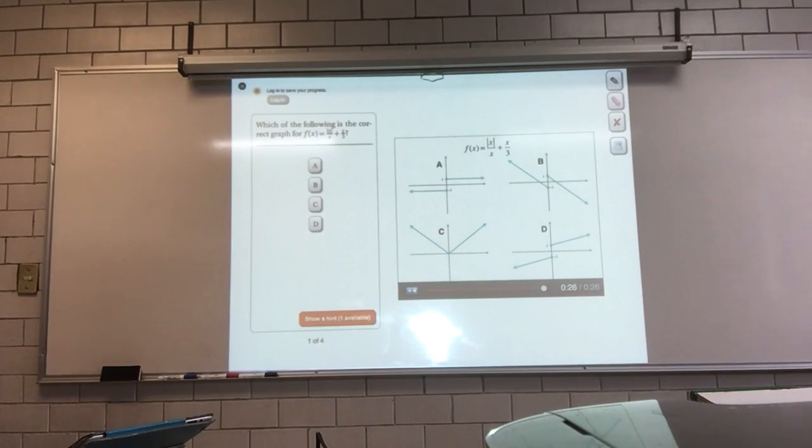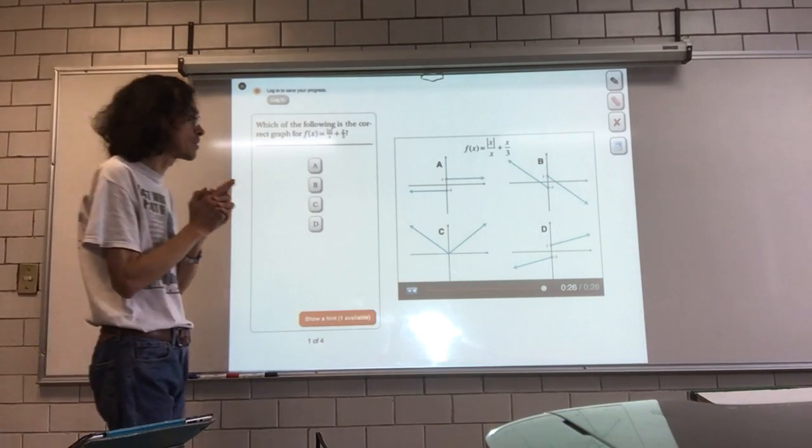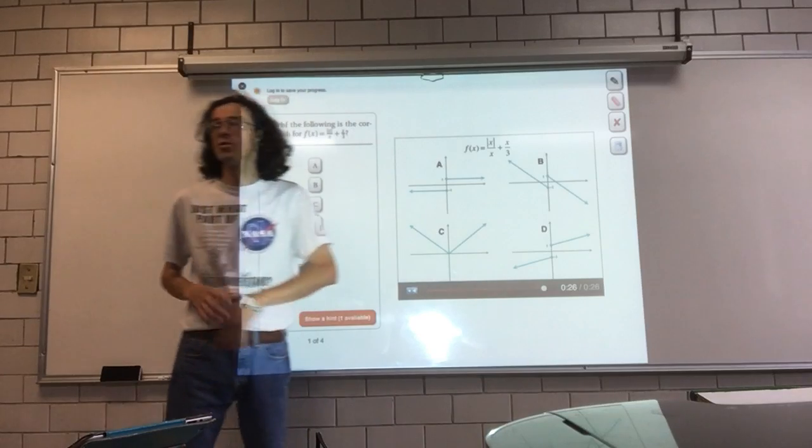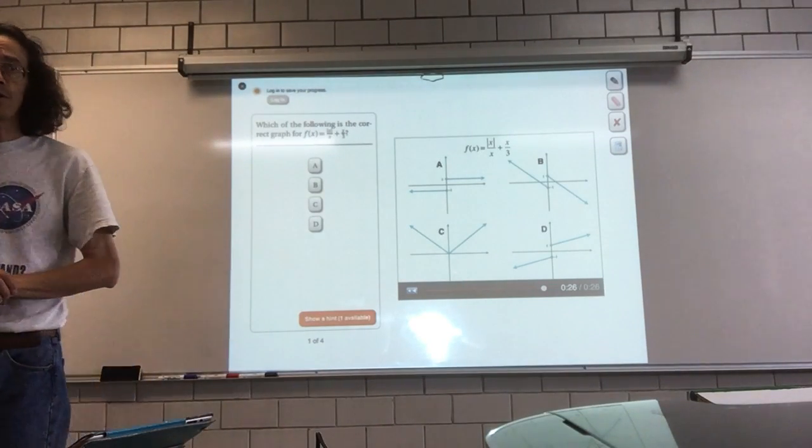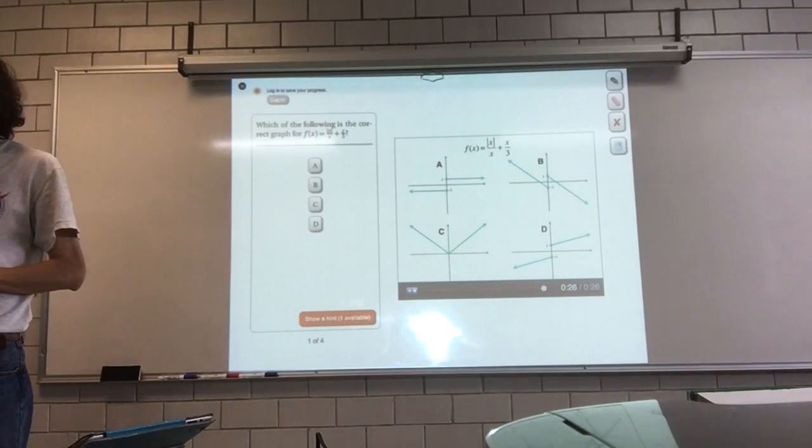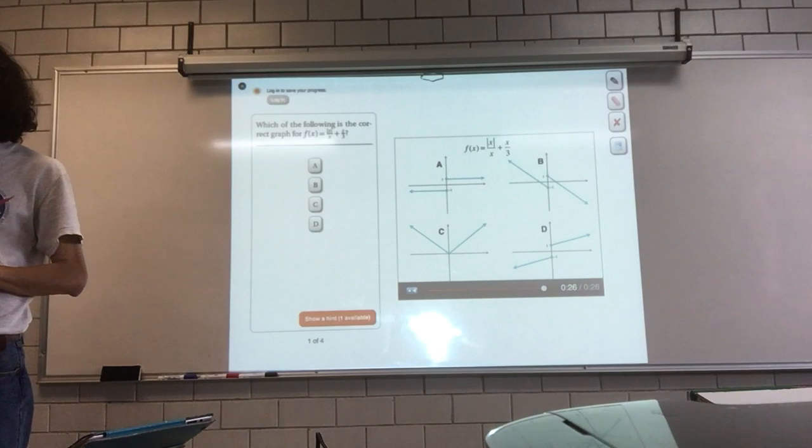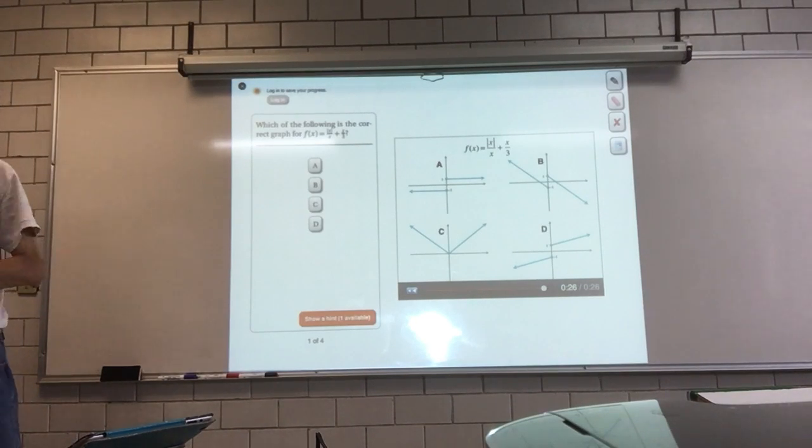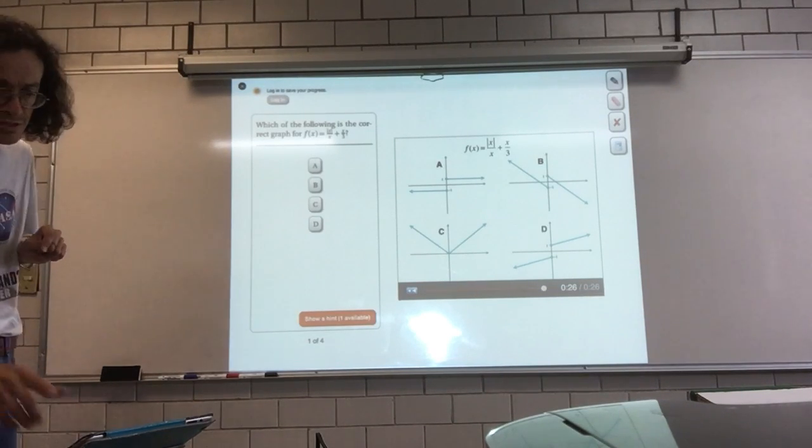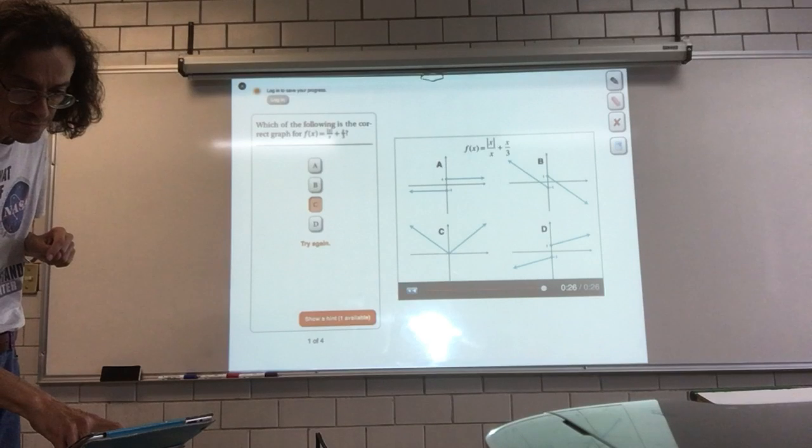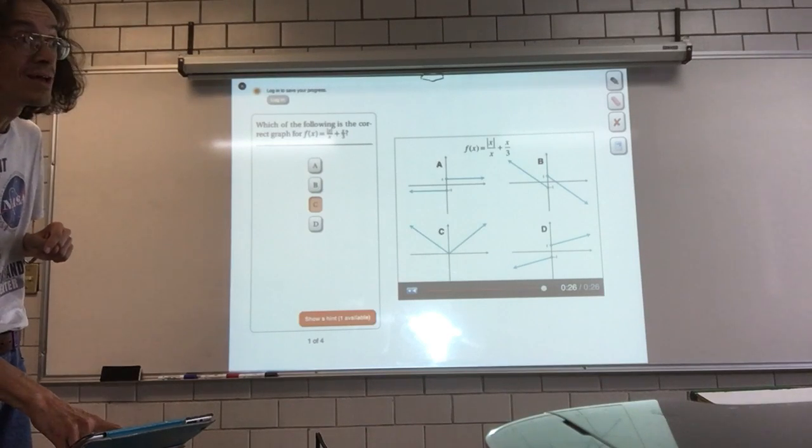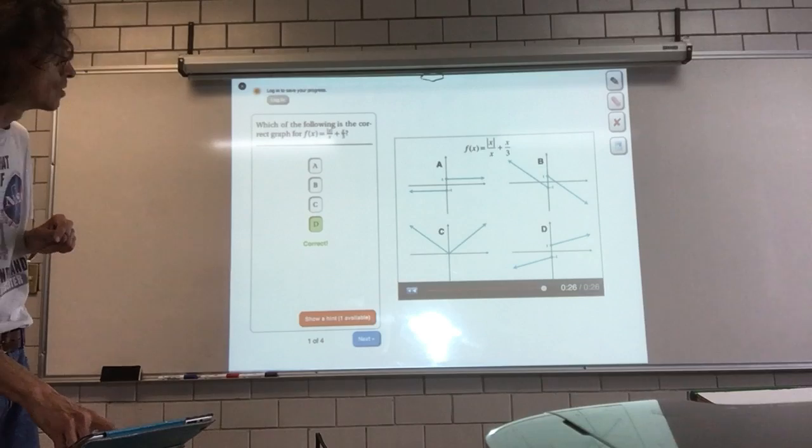¿Qué será positivo? El valor absoluto de un número es el valor positivo. El valor absoluto de 2 es 2. El valor absoluto de menos 2 es más 2. ¿Cuál sería la gráfica correspondiente a esta función? Correcto.